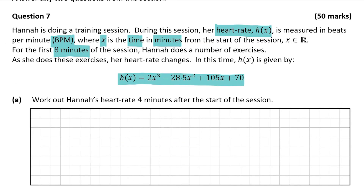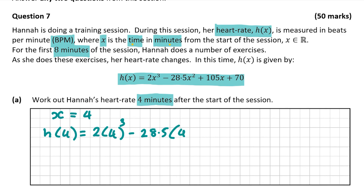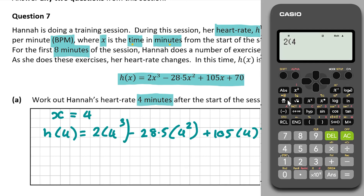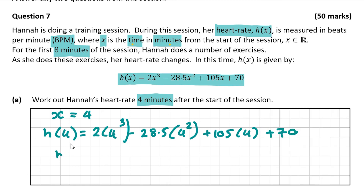Question A asks us to work out Hannah's heart rate 4 minutes after the start of the session. Since x represents the time in minutes, x is 4. So we fill in h(4): 2 multiplied by 4³ minus 28.5 multiplied by 4² plus 105 multiplied by 4 plus 70. Putting this into the calculator gives us an answer of 162 beats per minute. That's our final answer, worth five marks.